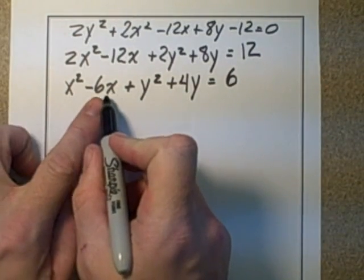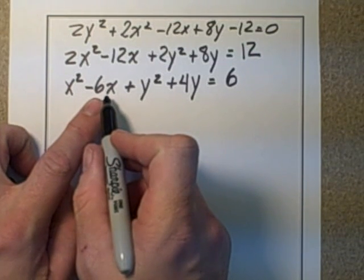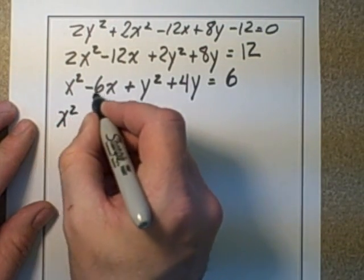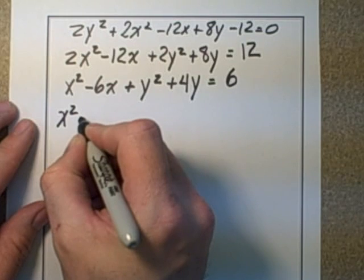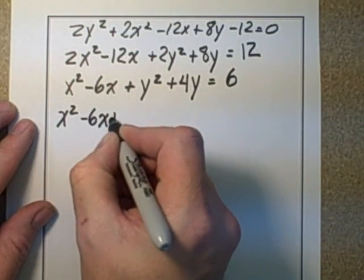So in order to complete the square, you take half of the number that's with the non-squared term and square it. And that's what you add in. So x squared, half of negative 6 is negative 3. Negative 3 times negative 3 is 9. So this is negative 6x plus 9.